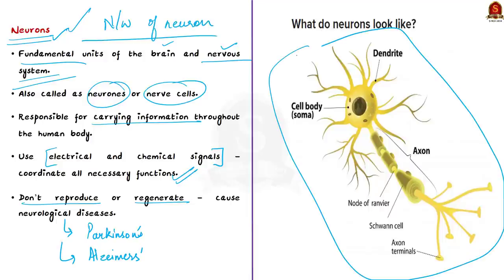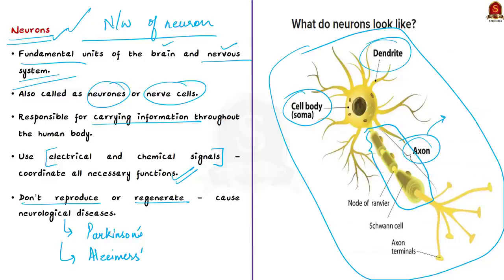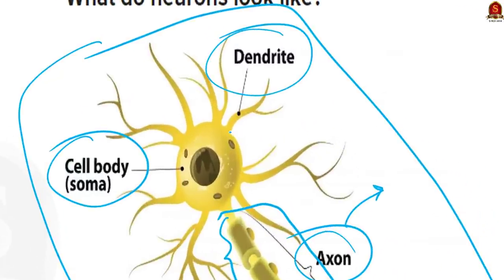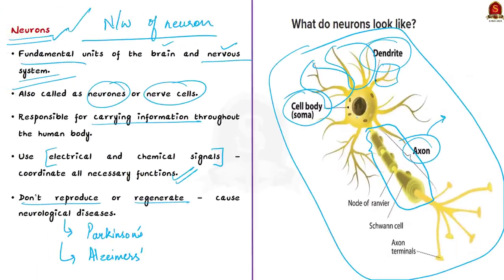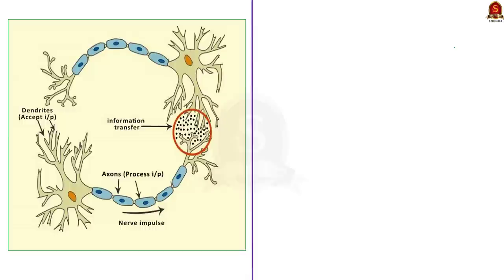A neuron looks like a tree — it has a cell body, dendrites, and axon. The cell body is the neuron's core; it carries the genetic information, maintains the neuron's structure, and provides energy. The axon is a long tail-like structure, and neurons generally have one main axon. Dendrites are the fibrous roots that branch out from the cell body; their main purpose is to receive and process signals from the axons of other neurons. Neurons receive information from other cells through dendrites (input), and the axon passes this information from the cell body to other cells (output).